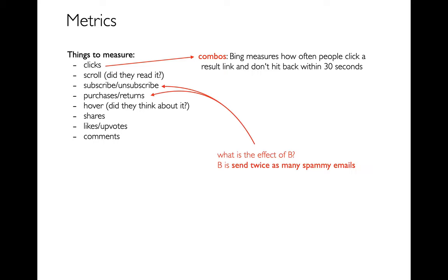Some of these are related in tricky ways. For example, if I'm sending really spammy emails, maybe I'm going to get people to purchase more things, but I also might be making them unsubscribe, which will hurt me in the long run. So these different metrics that make a lot of sense for a business — you have to think carefully about how to combine and weigh them. Especially what's tricky in A/B testing is it's really easy to optimize for the short term and forget about the long term.